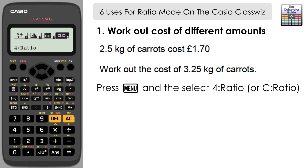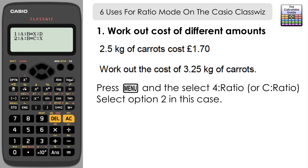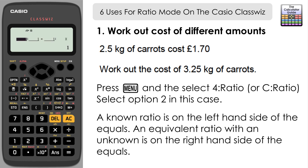To access ratio mode, press Menu then option 4 on the fx-85GTX, or option C on the 991EX. Select this mode and we have two different choices for where to position our unknown. For the first two uses I'll use option two, then switch to option one for the last four uses.